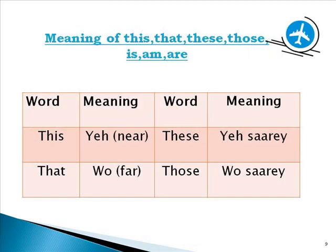Now let's look at the meanings of demonstratives: this, these, that, those. 'This' means 'yeh' (this) — when a thing is nearby. 'These' means 'yeh saare' (all these). 'That' means 'woh' (that) — when a thing is far. 'Those' means 'woh saare' (all those) — when many things are far away.